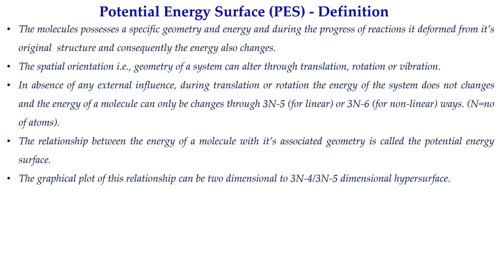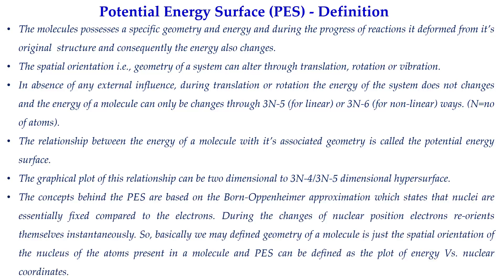The graphical plot of this relationship can be two-dimensional if only one variable is there — meaning one degree of freedom — and it can be up to 3N minus 4 to 3N minus 5 dimensional if there are N number of atoms. The concept behind this potential energy surface is actually coming from the Born-Oppenheimer approximation, which states that nuclei are fixed compared to the electrons because of their very high masses.